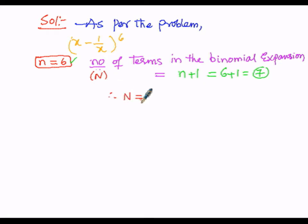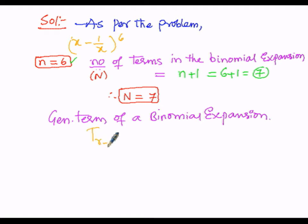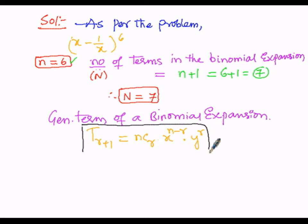Among these 7 terms, there will be a term which is free from x — that is, the constant term. To find it, we use the general term T(r+1) = nCr · x^(n−r) · y^r. Here the expansion is of (x − 1/x)^6.